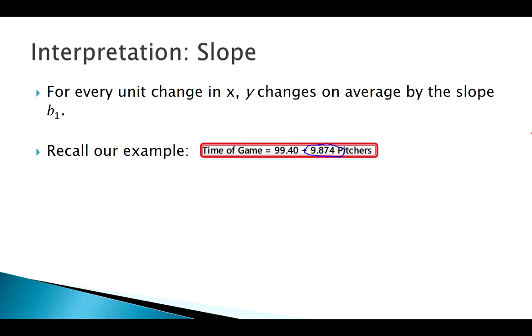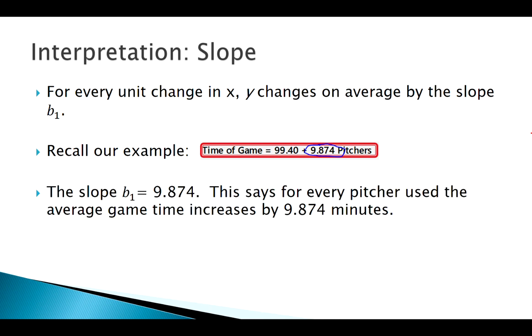How do I interpret that? What does the slope mean, that 9.874 here? Basically, what that means is for every unit increase in x, y is going to change by that much. So for our specific example, every pitcher I use, the game is going to run about 10 minutes longer.